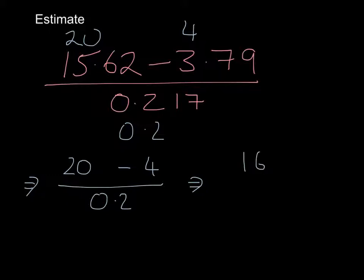But when I've said divided by 0.2, that's the same as times by 5. So I'm going to do 16 times by 5. Well, that gets me 80.